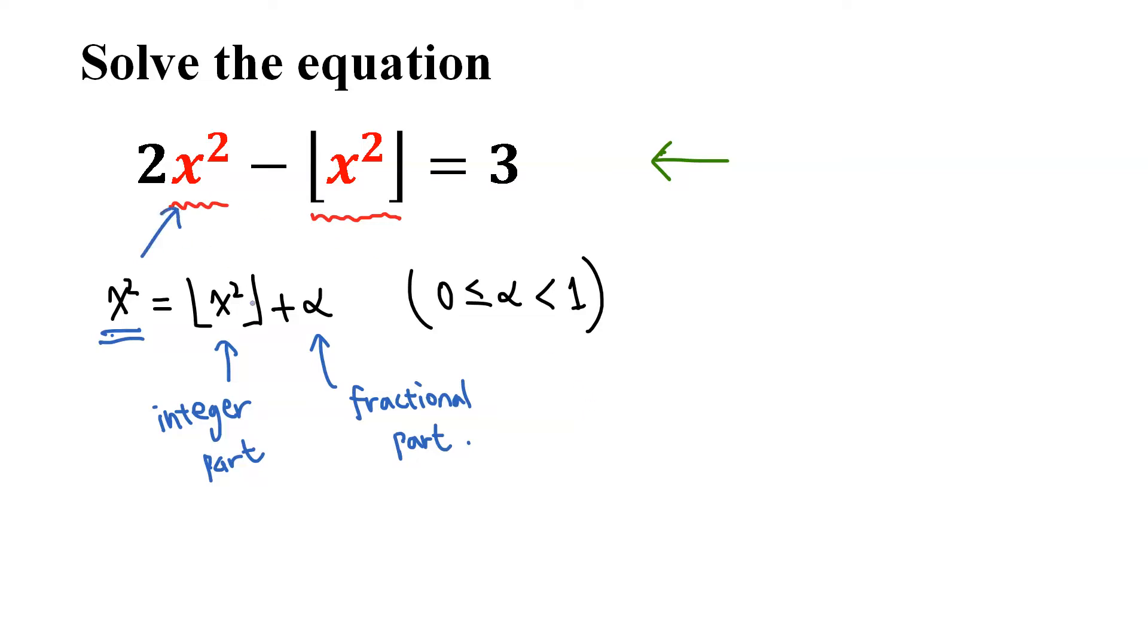So let's replace x squared with the right hand side. Then we have 2 times floor x squared plus alpha minus floor x squared equals 3.